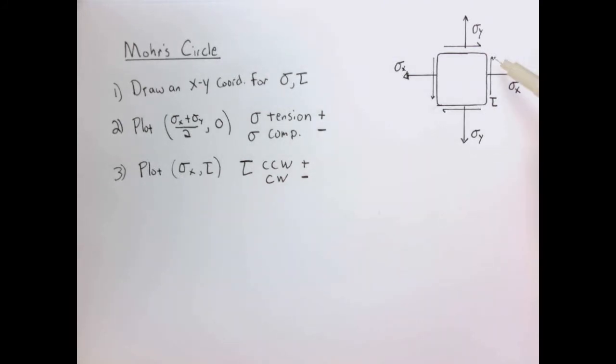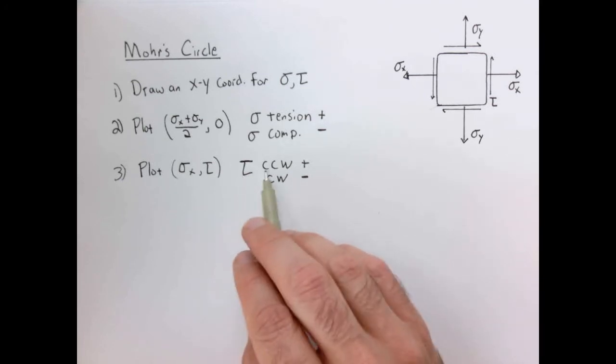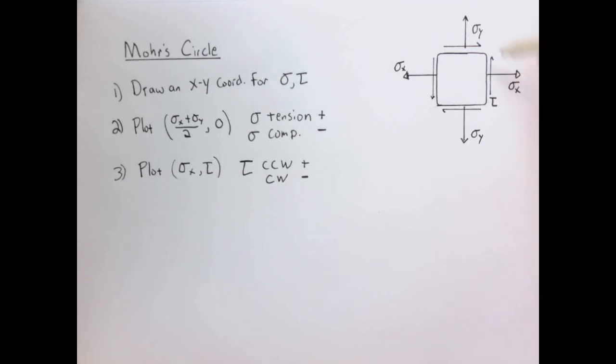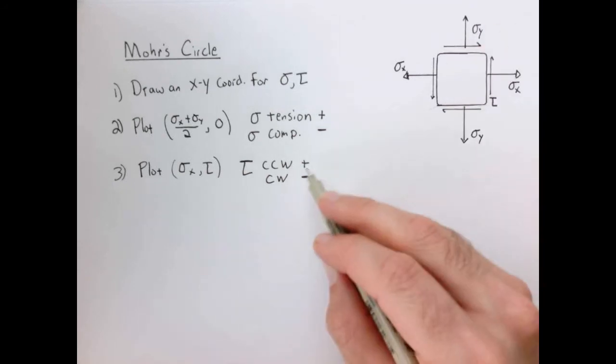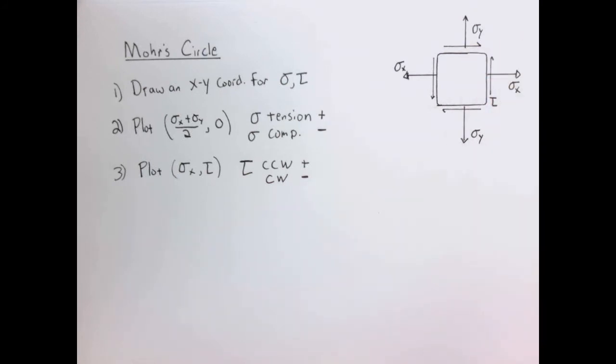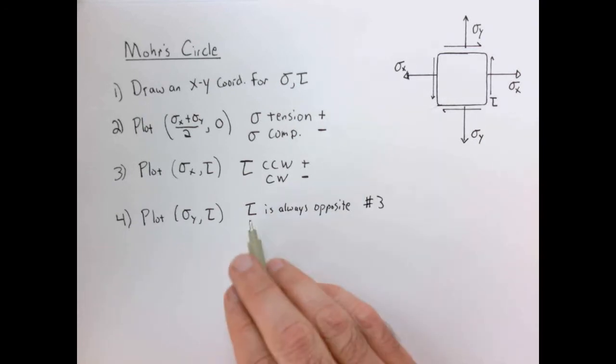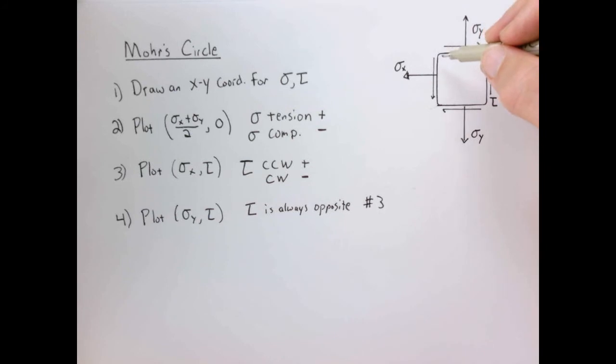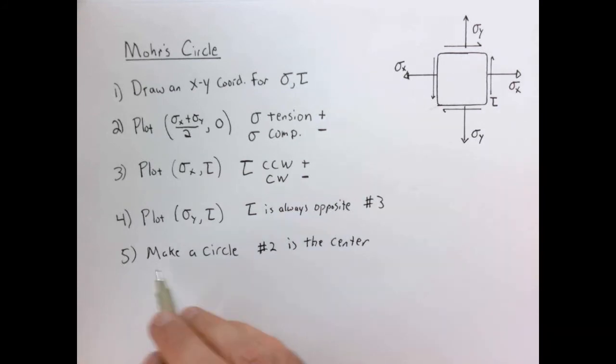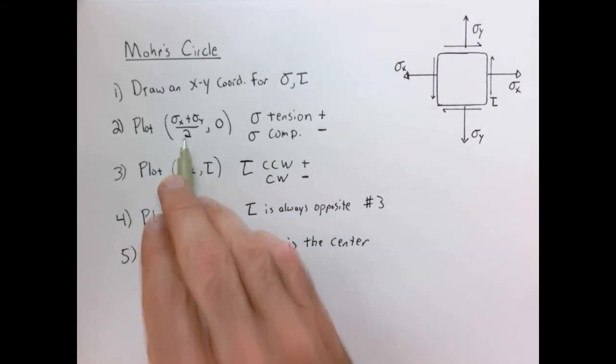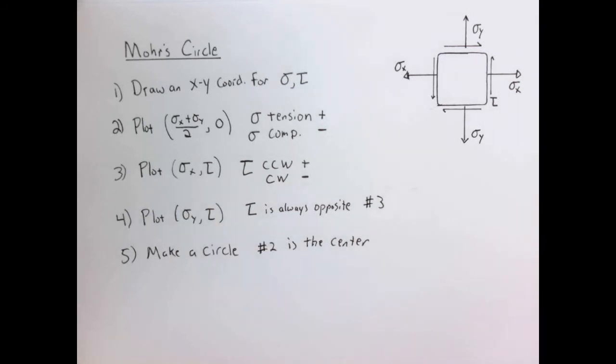Then we're going to plot the point sigma x, tau, so the values on this face and we're going to use the sign convention that when tau, the shear stress, is counterclockwise, meaning this would be positive because it wants to rotate that element counterclockwise, we use a positive value, clockwise would be a negative value. Next, we're going to plot the point sigma y comma tau, so the values on this surface using the same sign convention. And here tau, the shear stress, will always be opposite in sign of what it was in step three. And then finally, we just make a circle where the number that we plotted from step number two is going to be the center. And these two points lie along the circle and that's it.